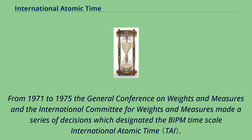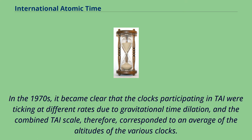From 1971 to 1975, the General Conference on Weights and Measures and the International Committee for Weights and Measures made a series of decisions which designated the BIPM time scale International Atomic Time. In the 1970s, it became clear that the clocks participating in TAI were ticking at different rates due to gravitational time dilation, and the combined TAI scale therefore corresponded to an average of the altitudes of the various clocks.